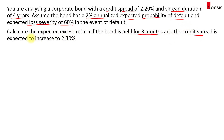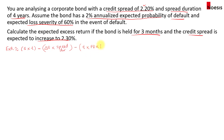The credit spread is expected to increase to 2.3% from the current spread of 2.2%. The formula for the excess return is approximately equal to the spread of the bond multiplied by the holding period, minus the change in the spread multiplied by the spread duration of the bond, and then minus the expected loss for the holding period.